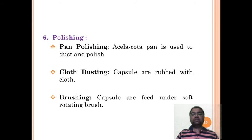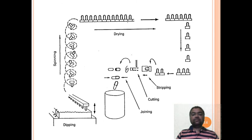This figure completely explains how the manufacturing process occurs. You can observe here the dipping of pins in gelatin solution, then it gets spun at 180 degrees, and at the same time there is a cool blast for drying. Then pins are rotated for stripping where bronze jaws strip the caps or bodies.